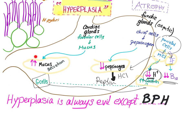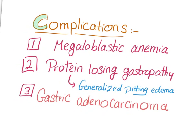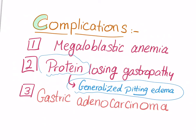Increased mucus secretion — and this mucus is protein — when it is secreted into the lumen of the stomach, it's lost in the GI tract. That's protein being lost. Plus, decreased pepsin leads to indigestion of proteins, which is also proteins being lost. This all equals protein-losing gastropathy. When you lose protein, you lose oncotic pressure and you end up with generalized pitting edema.